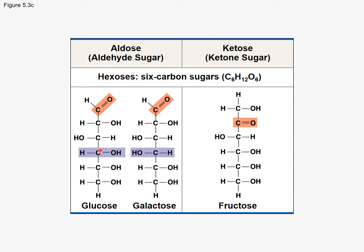The only difference is that on carbon number four, the hydroxyl group is on the right-hand side for glucose, and it's on the left-hand side for galactose. These are examples of enantiomers — they are actually mirror images of each other. So if you flip them to the side facing each other, all of the functional groups would be in the same exact location as if they were looking in a mirror at each other.